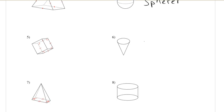Next one, sphere. Number 6 is just a cone, like an ice cream cone. It's just missing the ice cream. Number 8 is the cylinder.